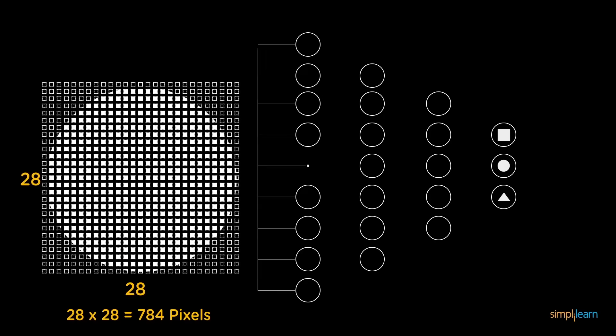Here's an image of a circle. This image is composed of 28 by 28 pixels, which makes 784 pixels. Each pixel is fed as input to each neuron of the first layer.